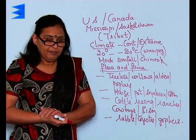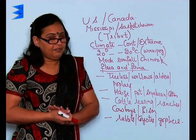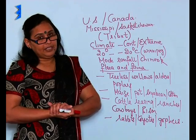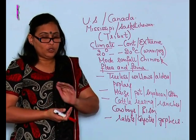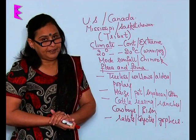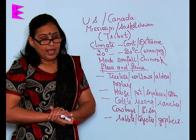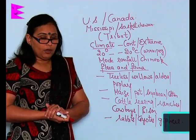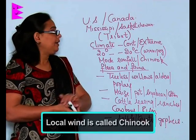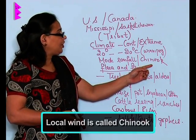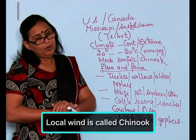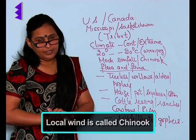The rainfall received in the prairies region is of moderate type and the local wind named Chinook blows here continuously.